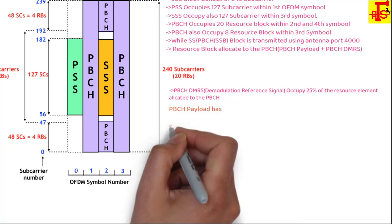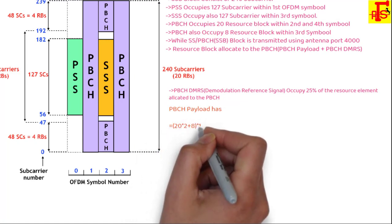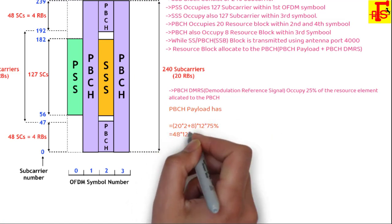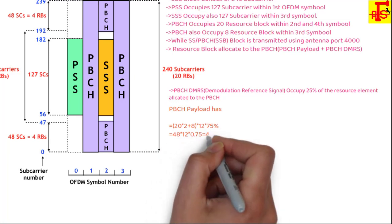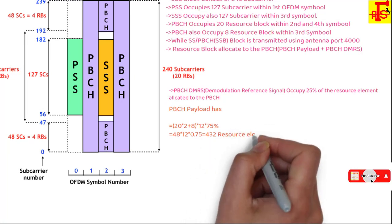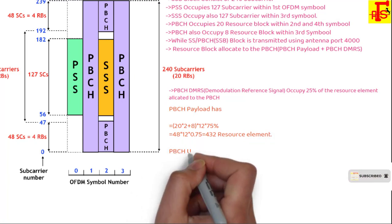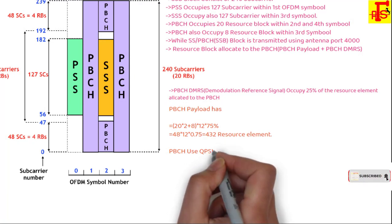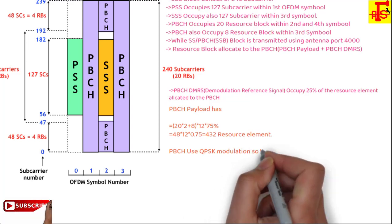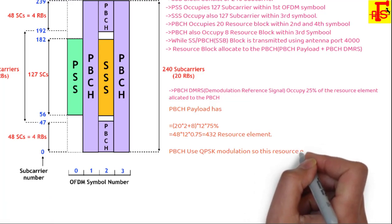Total 48 RB are allocated for PBCH only - 40 RB on 2nd and 4th symbols plus 8 RB on 3rd symbol. That's 48 times 12 subcarriers. 25% is used for DMRS and 75% for payload. So 48 times 12 times 0.75 equals 432 resource elements for PBCH payload.